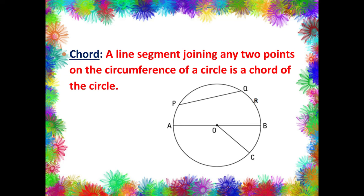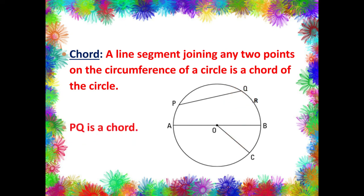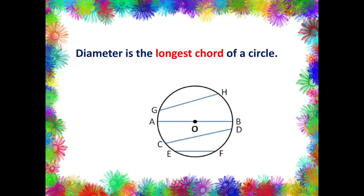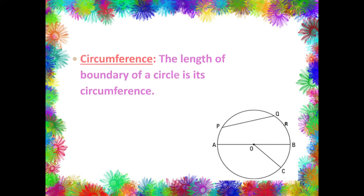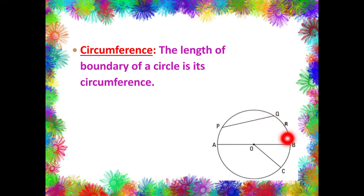Next, let us learn about chord. A chord is any line segment which joins any two points on the boundary of the circle. Here PQ is a chord; QC is also a chord. You can join any two points to form a chord of the given circle. Now, the diameter is the longest chord of a circle, because if you draw many chords inside the circle — GH, AB, CD, EF, and so on — and measure them, the diameter is the longest.